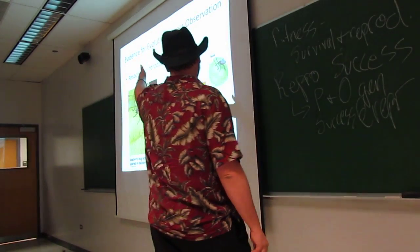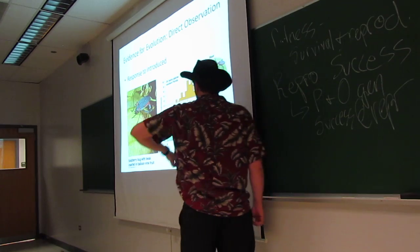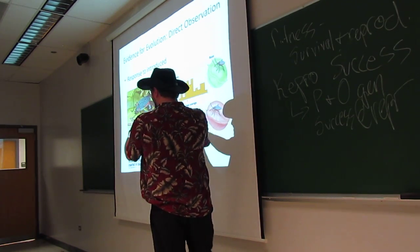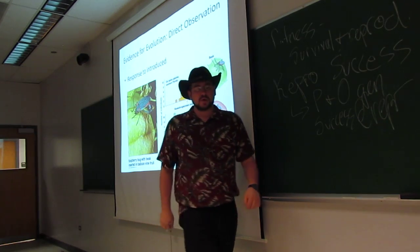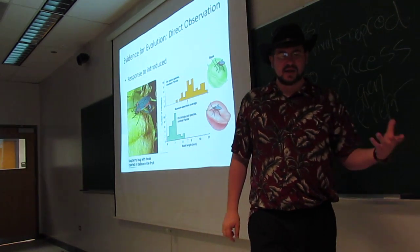Direct adaptation within a population by directly observing the beak and wings associated with the fruit they exploit. So, a great example of direct observation.